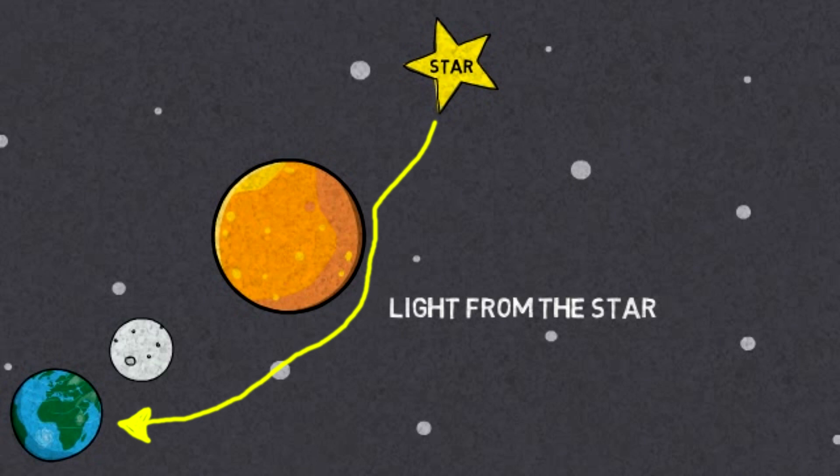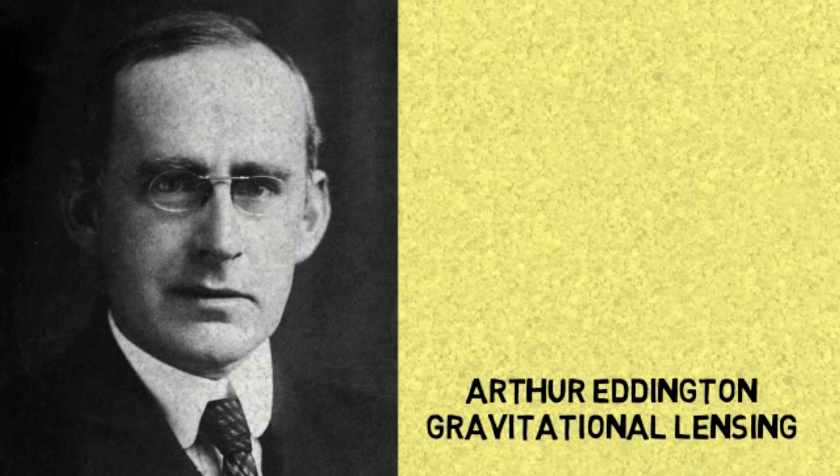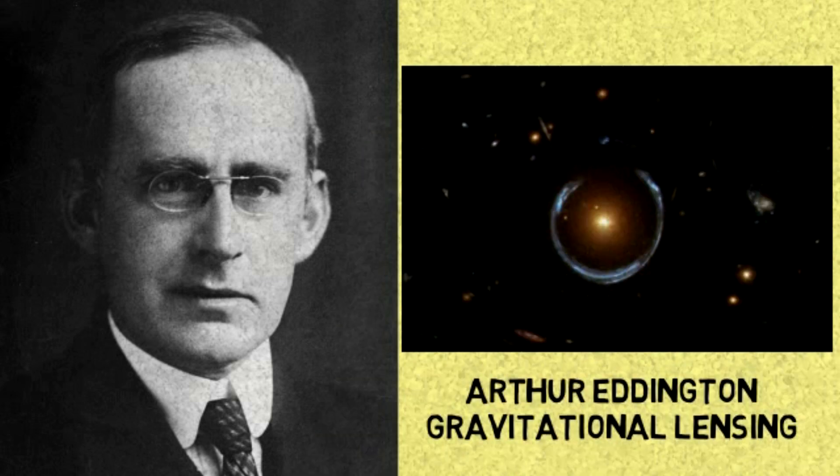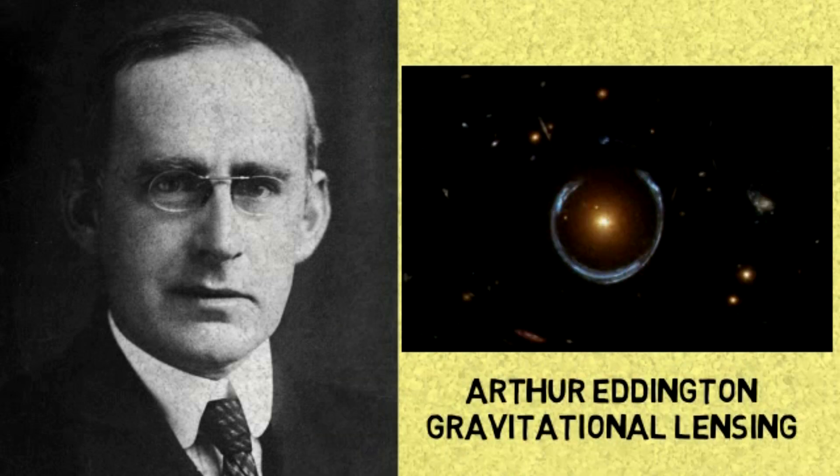Because the trajectory of that light would have shifted, and it looks like that star is really here. This phenomenon is called gravitational lensing. And it is one of the ways we have to prove Einstein's general relativity as a theory of gravity.